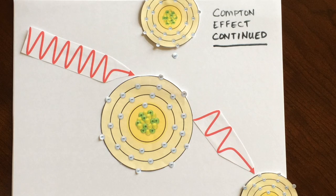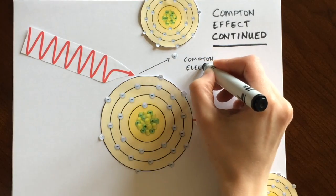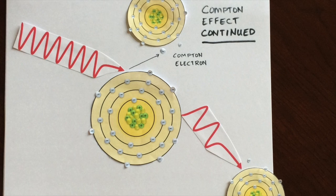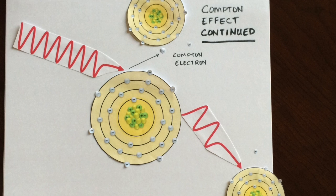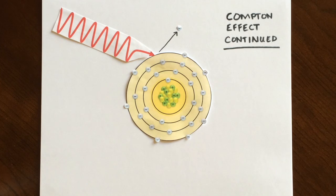Continuing with the Compton effect, during this type of interaction the ejected electron, known as the Compton electron, and the scattered x-ray may have enough energy left to go on causing more ionization reactions before losing all of their energy. You will learn in radiobiology that ionization reactions are what increase potential harm to the patient.